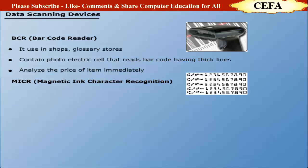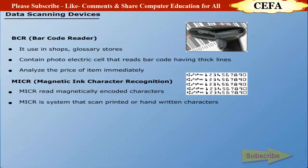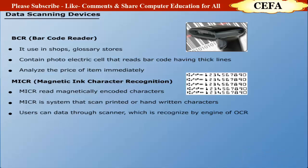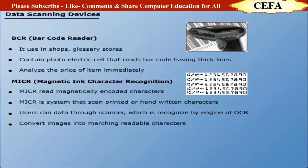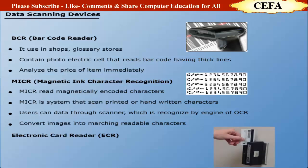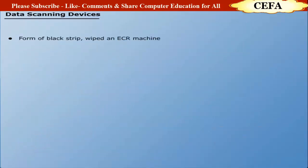MICR — Magnetic Ink Character Recognition: MICR is used to read magnetically encoded characters. It is a system that provides full alphanumeric recognition of printed or handwritten characters by scanning the form. The user scans data through a scanner which is recognized by an OCR system engine. The MICR converts images into machine-readable characters. Electronic Card Reader (ECR): An electronic card reader is used to scan e-cards and smart cards like Visa cards and bank credit cards. It reads the memory card of ATM, debit, or Visa cards. The memory card is in the form of a black strip which is swiped through an electronic card reader machine.